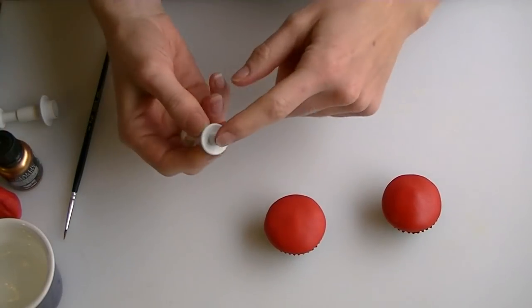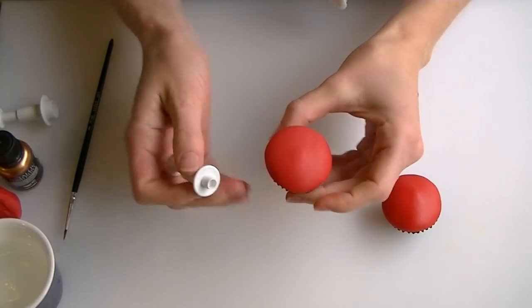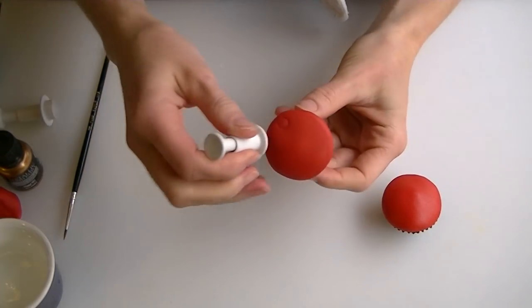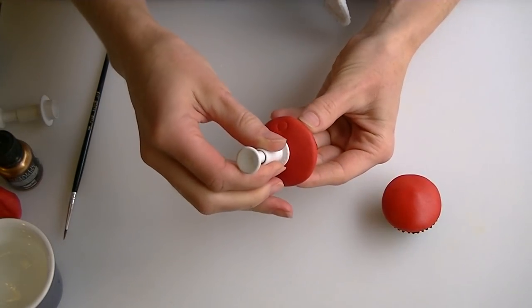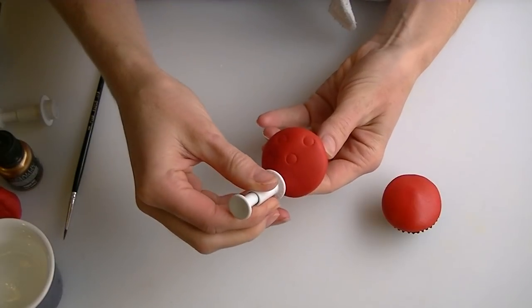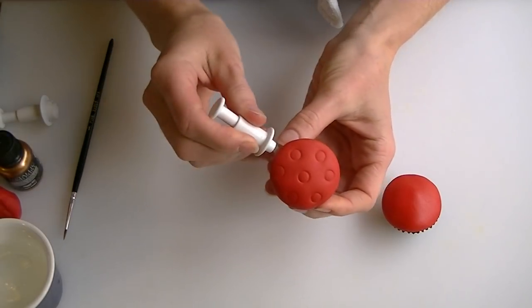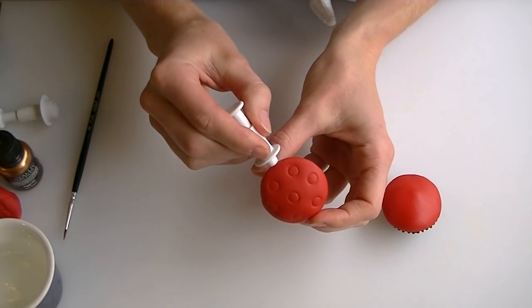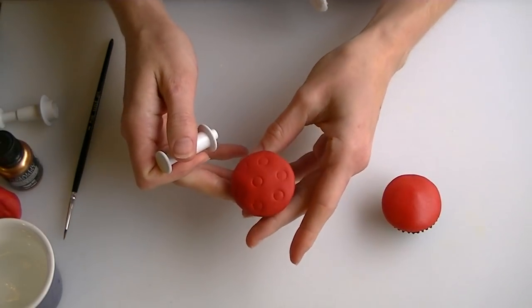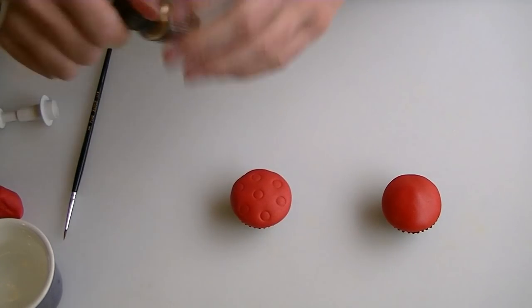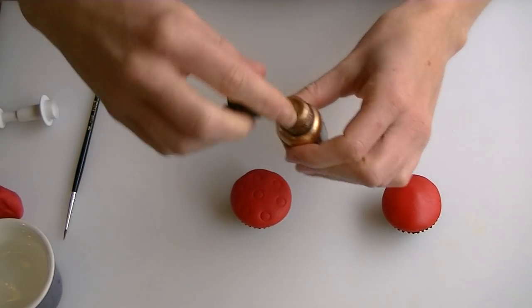Now you can paint on patterns freehand, or what I'm going to do is I've got a little circle cutter and I'm just going to put some indentations in. I'm not pressing too hard, just enough that it's going to leave a little dot. I'm not sure how well you can see those on the camera, and they're going to be my guidelines now for when I'm painting on.